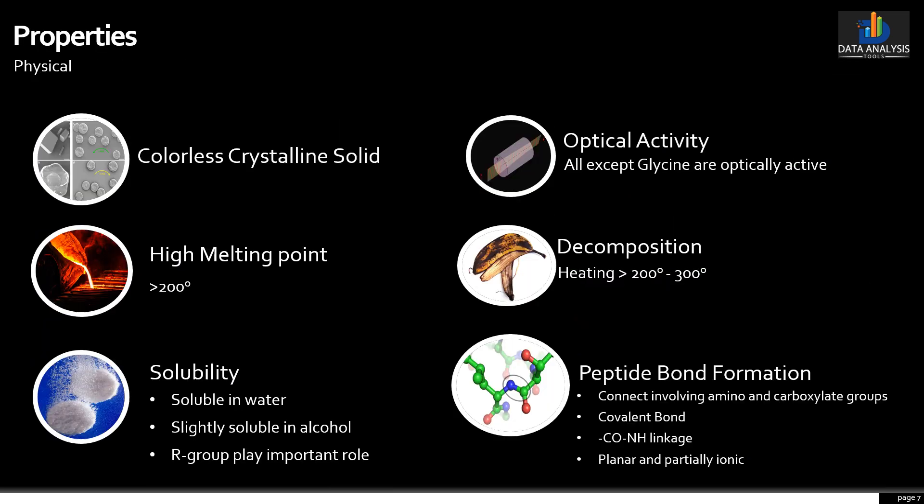It is critical that all students of life sciences know well about the properties and chemistry of amino acids and other building blocks of biological systems. Otherwise, it is very difficult to think or talk about proteins, enzymes, or nucleic acids, which we all need to study as part of the biology curriculum. Let us first have a look at the physical properties of alpha amino acids.